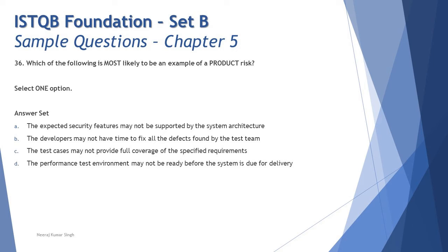Option A says: the expected security feature may not be supported by the system architecture. Security is one of the quality characteristics, and yes, this fits product risk. If a product releasing to the market is not secure in terms of data, credentials, or personal user details, people will stop using it — leading to product failure. So Option A looks like a strong candidate for product risk.